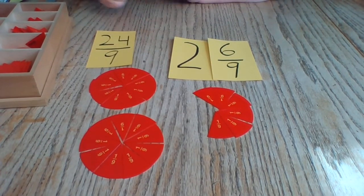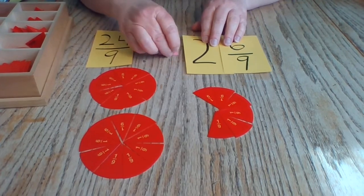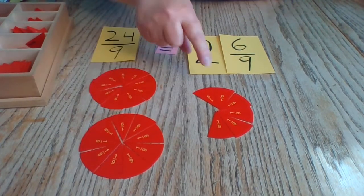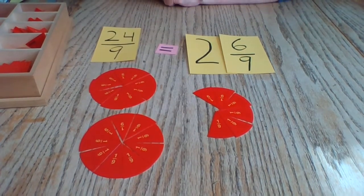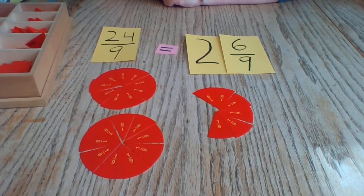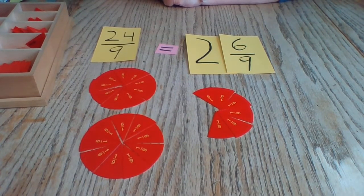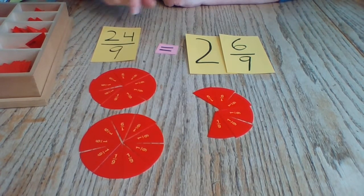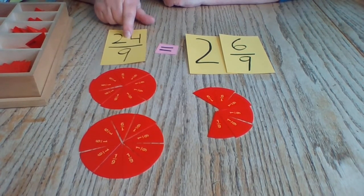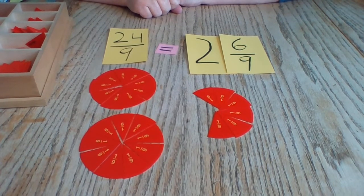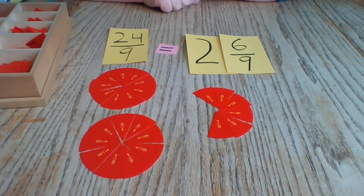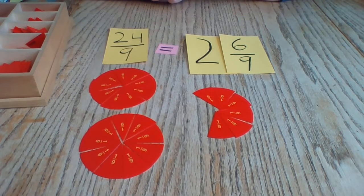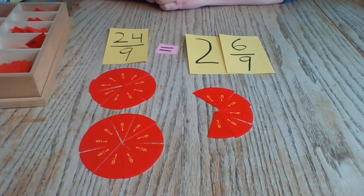So remember that pile of 24 ninths we had is equal to two and six ninths. This is where it is definitely easier to imagine two and six ninths than it is to imagine 24 ninths. That was a big pile of ninths. And that is the end of our lesson to convert an improper fraction to a mixed number.